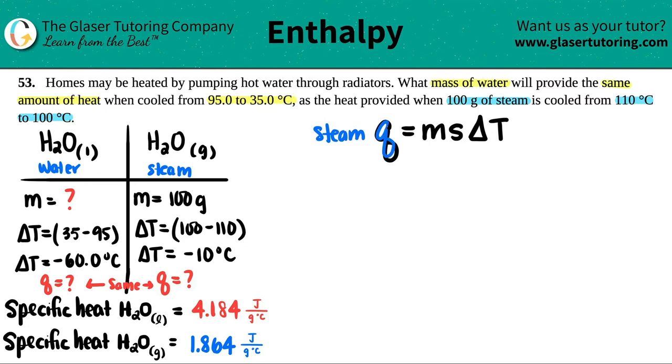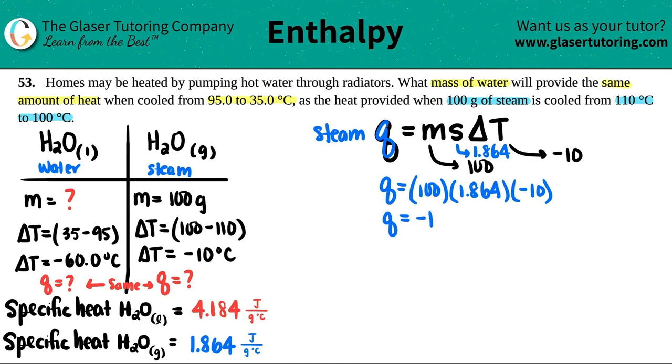We know the mass is 100 grams, we know the delta T is negative 10. What's the specific heat of steam? That's coming from constant numbers. We can't take 4.184 because it's not liquid. The specific heat of steam, the gas one, is 1.864. So Q equals 100 grams times 1.864 times negative 10. That gives us negative 1,864 joules.